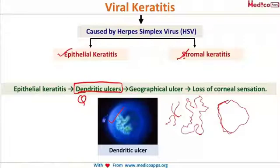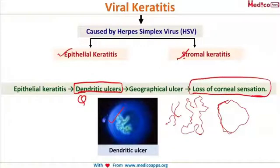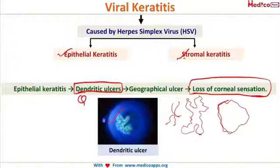This branching dendritic ulcer further progresses into a geographical ulcer, which looks like the map of a country, ultimately resulting in loss of corneal sensation. Whenever you suspect a viral corneal ulcer, you can touch the patient's cornea with a wisp of cotton — in a normal eye, corneal sensations are preserved and the patient will blink, but this is absent in herpes keratitis.